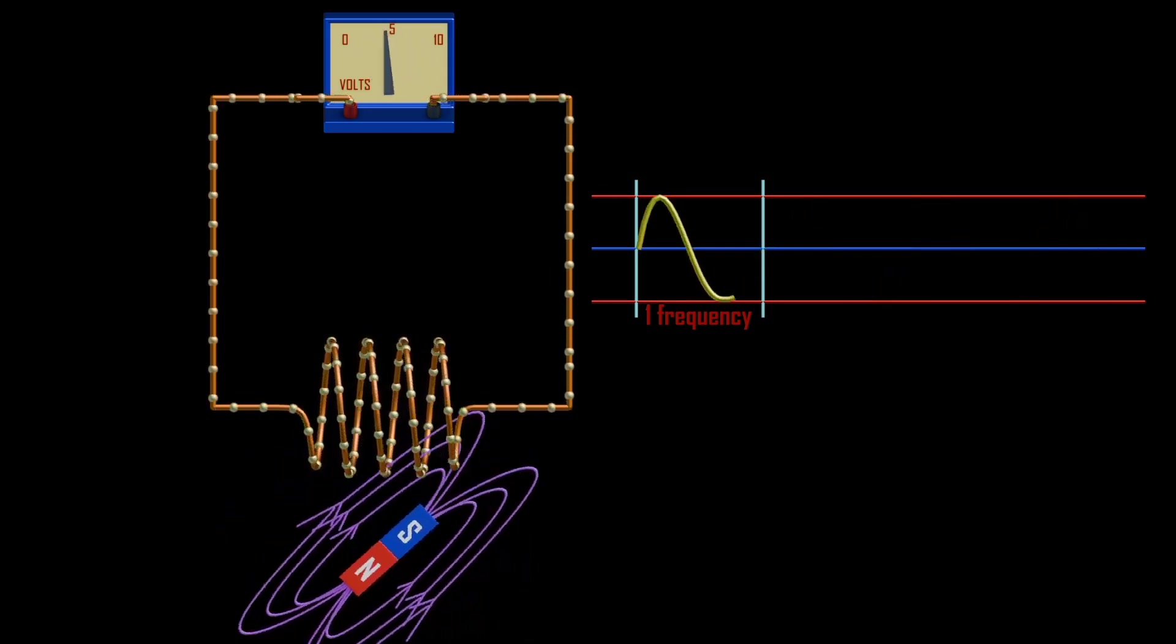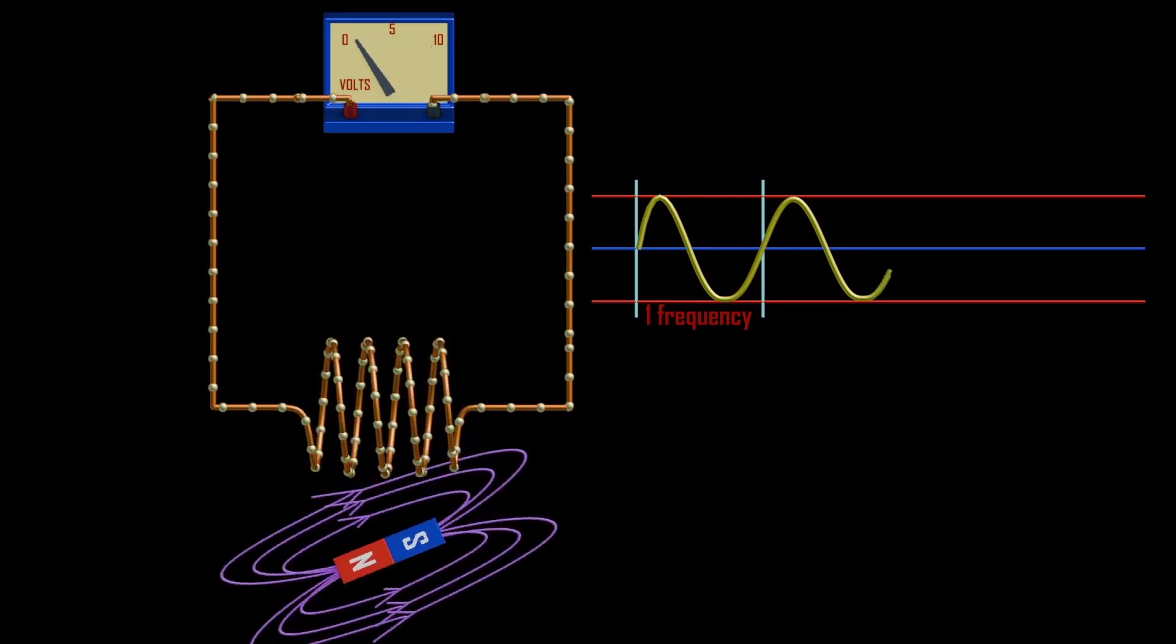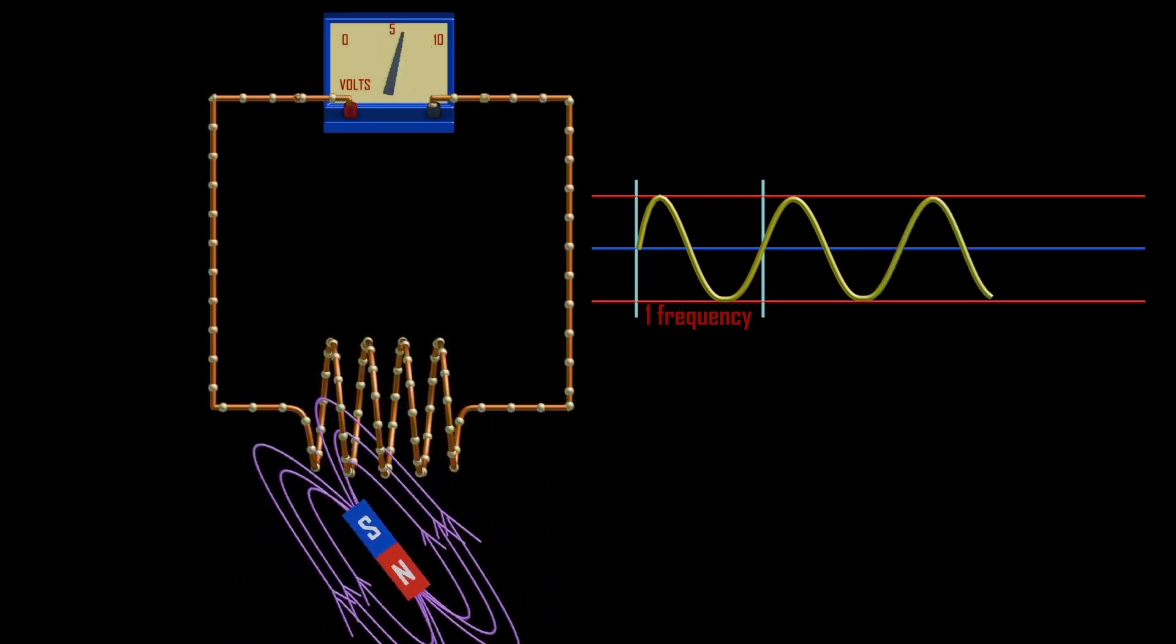Electrons exist in a conductor. If voltage is applied to the conductor, they will flow. Hence, they are responsible for the current flow.